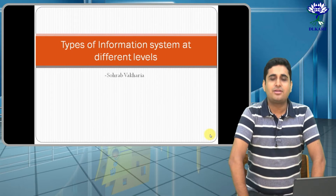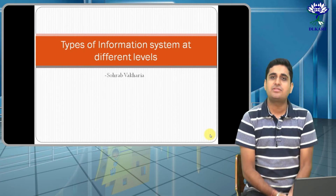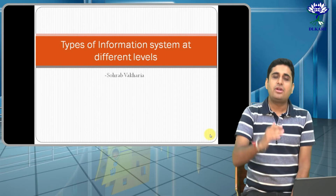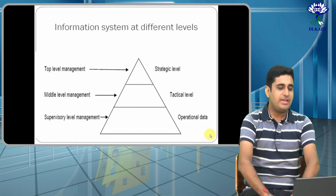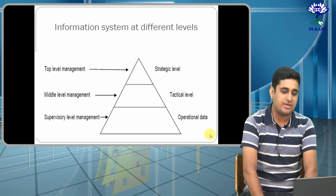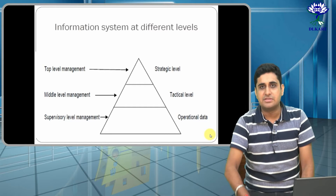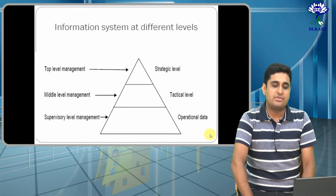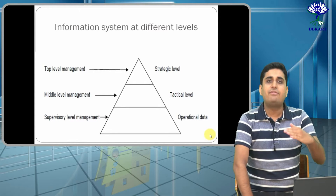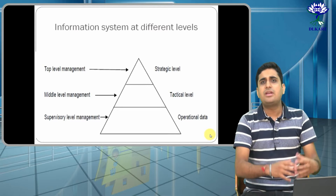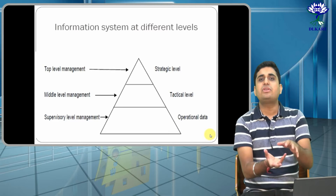Hello friends, Swarab here. Today we are going to discuss types of different information systems at their own different levels. In the diagram we have top level management, middle level management, and supervisory level management — three different levels. These are abstract levels; they are not realistic designations, but the top level management defines a strategic level.